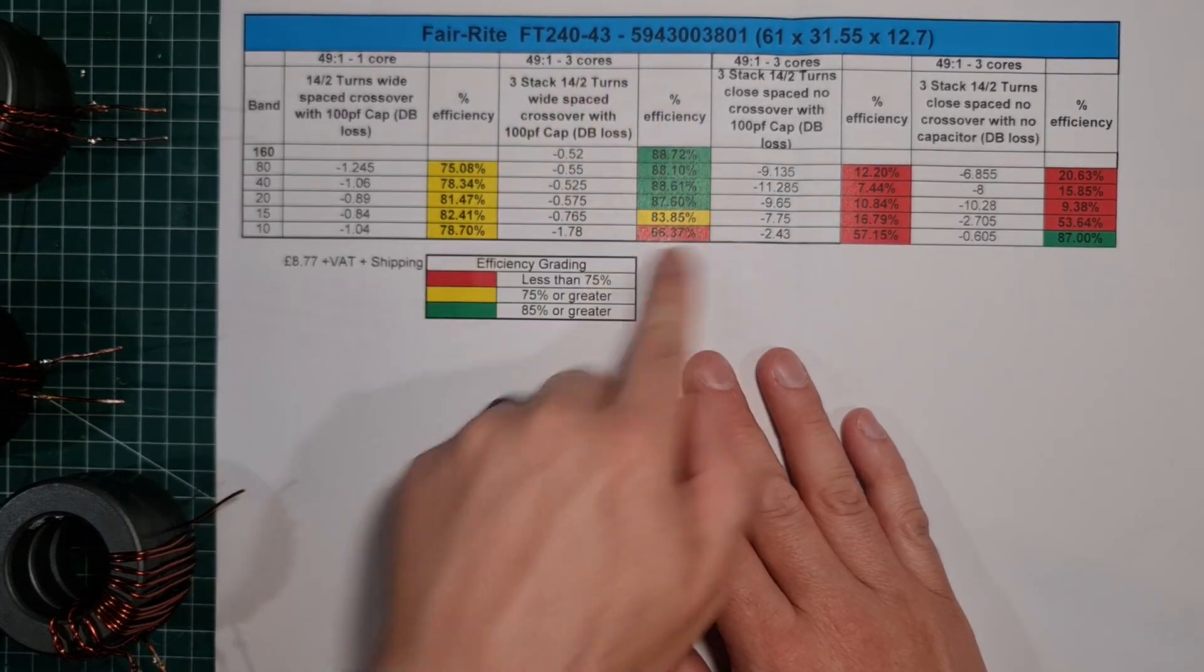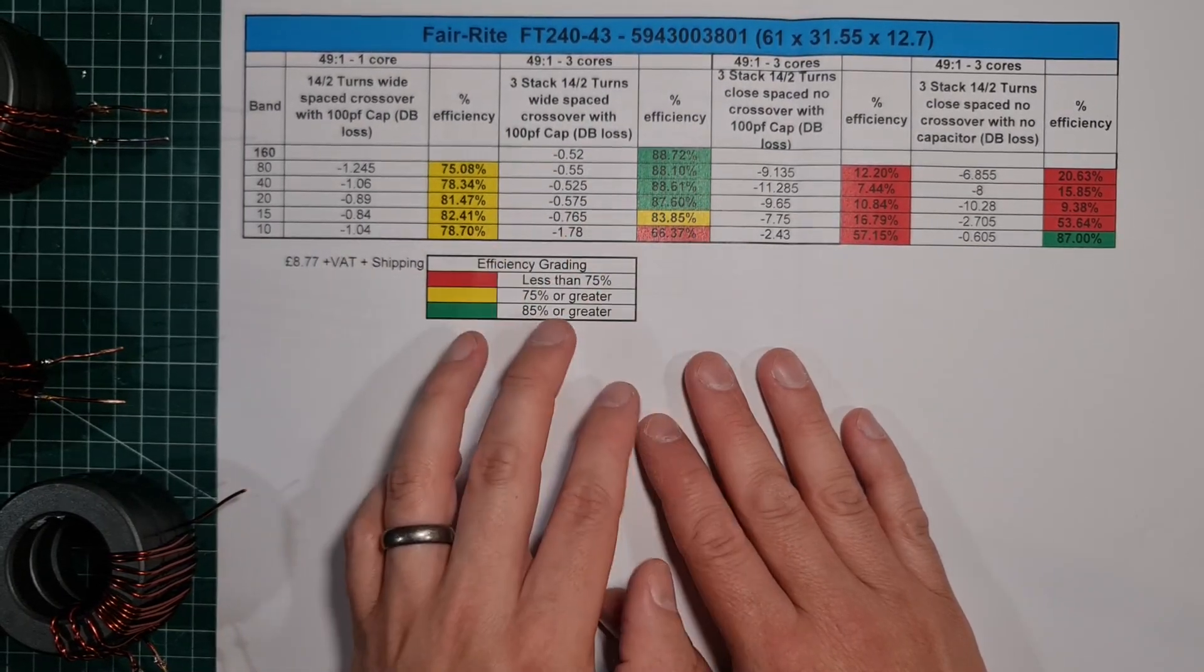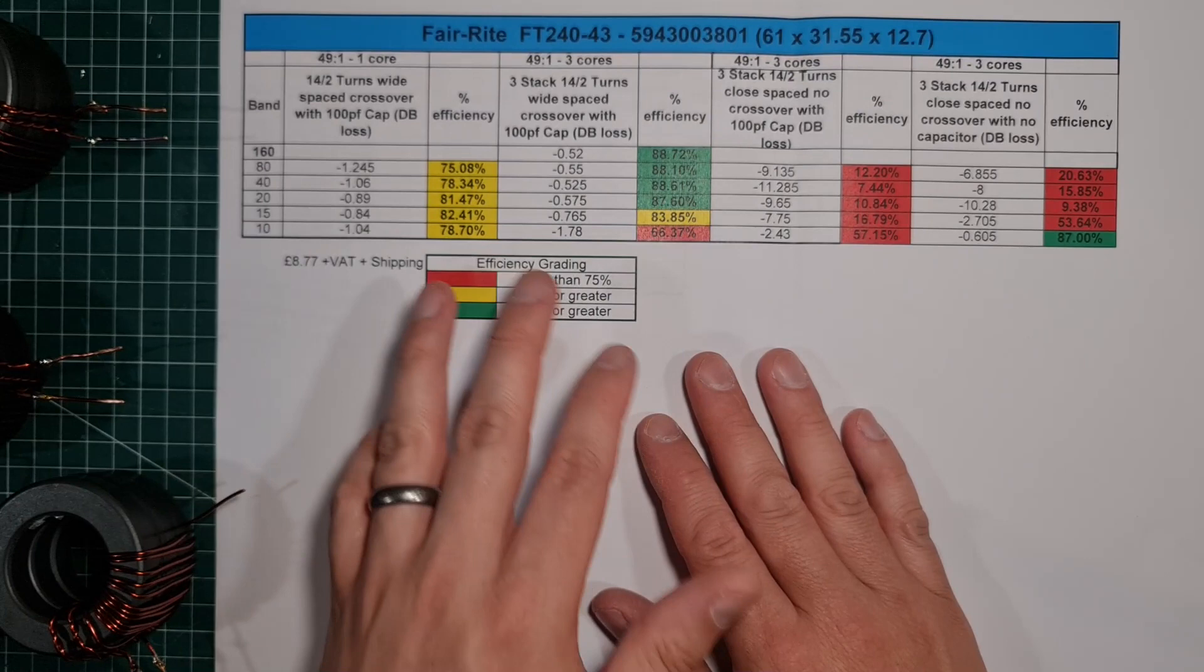That was kind of what I did for reference before we started looking at this core. So then we actually look at this one here, and this is actually one of the two choices that you should use, I think, if you're going to use a three-stack.